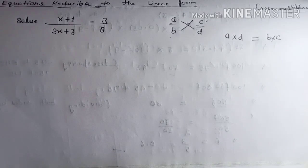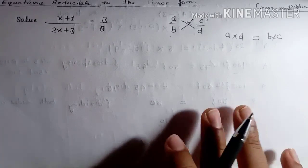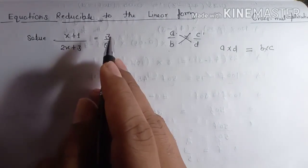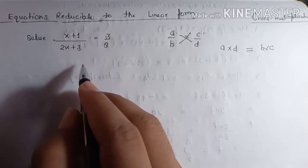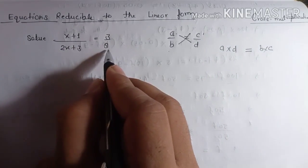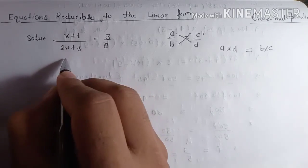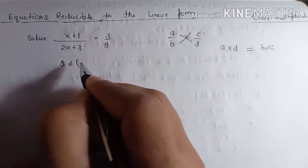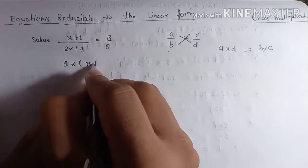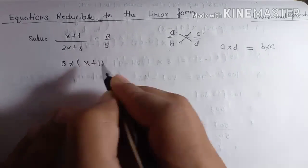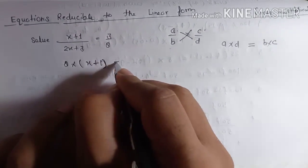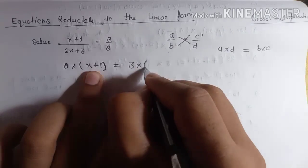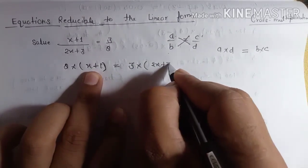Now see how to implement this in solving our questions. This is: x plus one upon two x plus three is equal to three upon eight. Cross multiplied, so eight is now multiplying x plus one, and that is equal to three multiplying two x plus three.